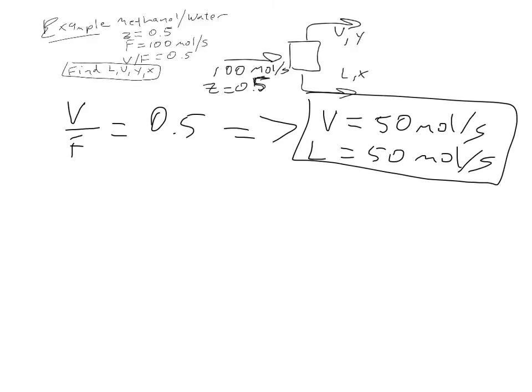Now we just need to find Y and X, the concentrations of the liquid and vapor streams. We'll simply create a McCabe-Thiele diagram for our flash drum and use that to determine Y and X. The first thing we want to do using the graphical method is come up with an equation for our operating line.